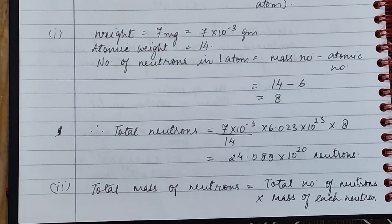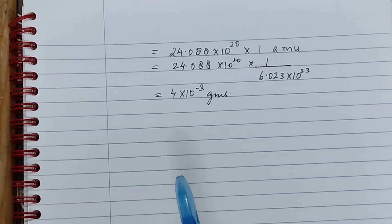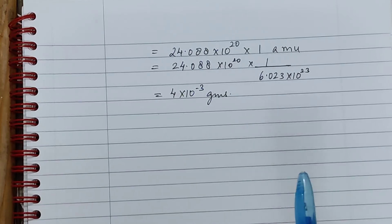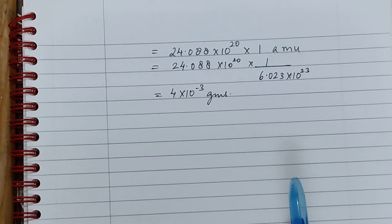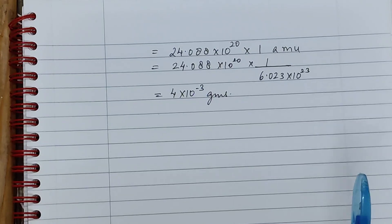The total mass of neutrons equals the total number of neutrons multiplied by the mass of each neutron. This is 24.088 into 10 to the power 20 multiplied by 1 amu, which equals 24.088 into 10 to the power 20 into 1 divided by 6.023 into 10 to the power 23, giving a total mass equal to 4 into 10 to the power minus 3 grams.